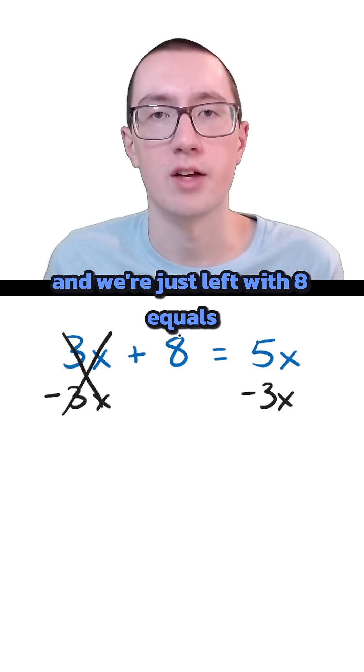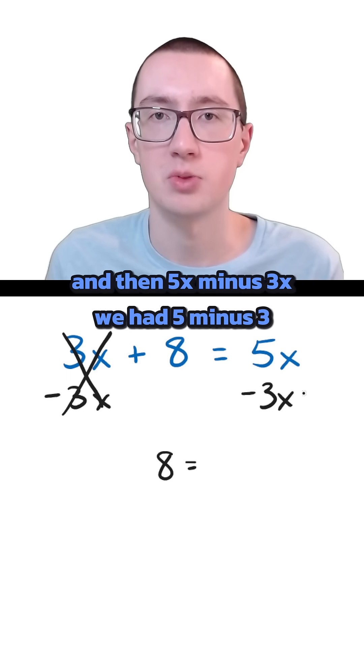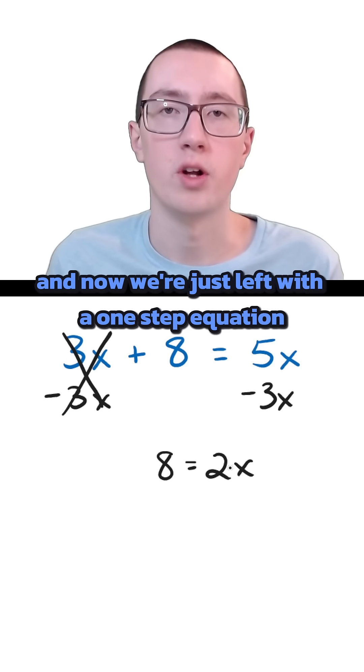So these cancel out, and we're just left with 8 equals, and then 5x minus 3x. We had 5 minus 3, now we only have 2x. And now we're just left with a one-step equation.